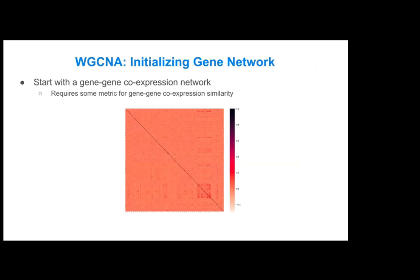For WGCNA, you start by initializing a gene-gene co-expression network. You need a metric for determining gene-gene co-expression similarity, and you build a square matrix of genes where each cell represents the similarity between two specific genes. You can see patterns in this matrix showing how similar genes are with each other.